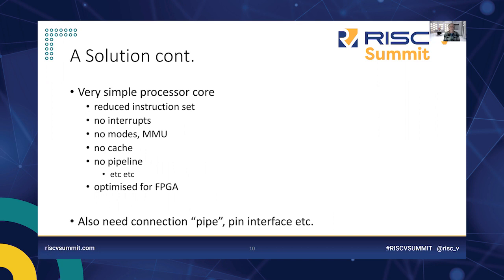What would a thread processor look like if designed from scratch? I might want a simple instruction set, no interrupts, no complicated modes, no complex cache or pipeline, and I'd optimize it for FPGA or ASIC design. We'd also need to design connection hardware — plumbing to connect things together. By 'pipes' I mean a hardware implementation of mailboxes, queues, and all the things that connect tasks in an RTOS. We need to connect the thread processors together.